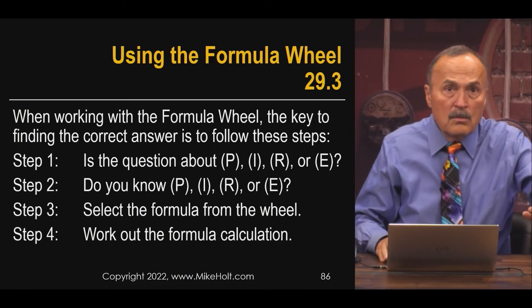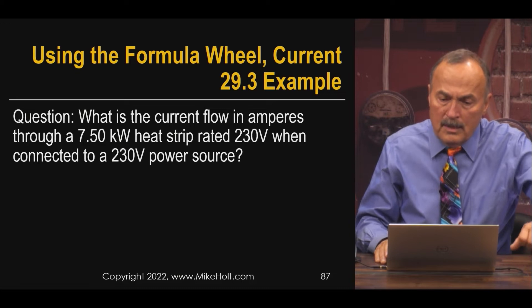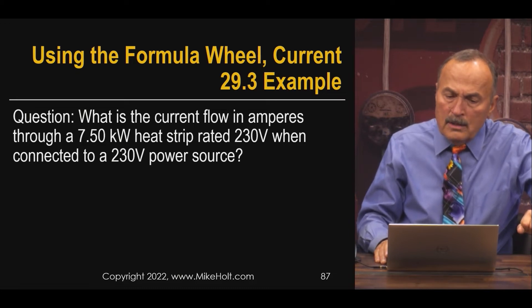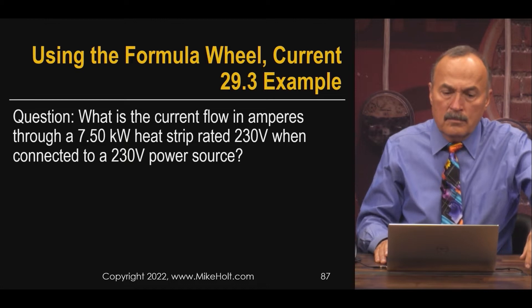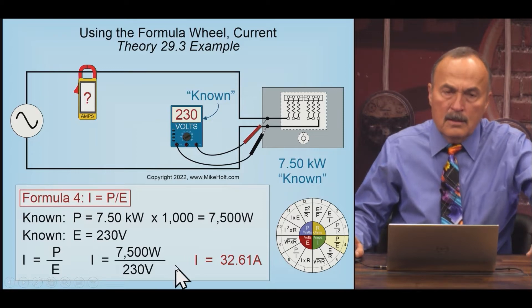Then what do I know? Circle those and then go to the wheel. So here's something asking what's the current if you know the kW and if you know the voltage. Well, I is equal to P over E. Not even gonna waste any time, and it happens to be formula number four in the wheel.